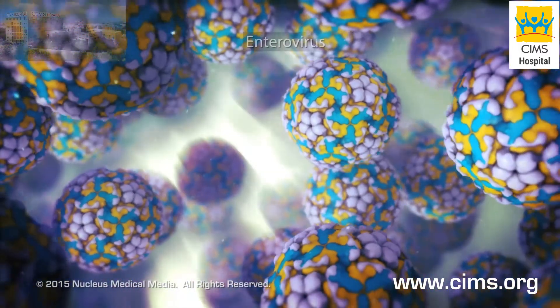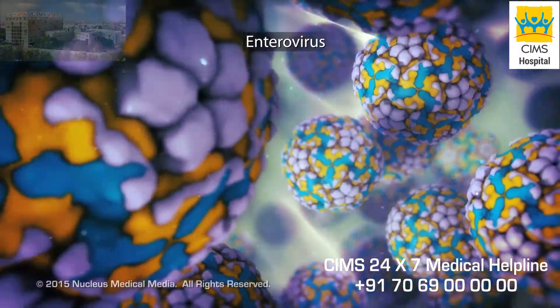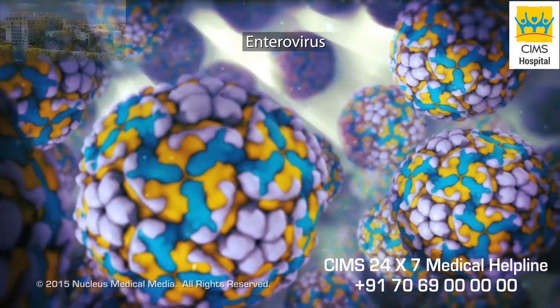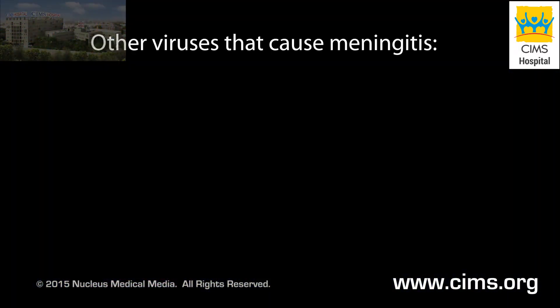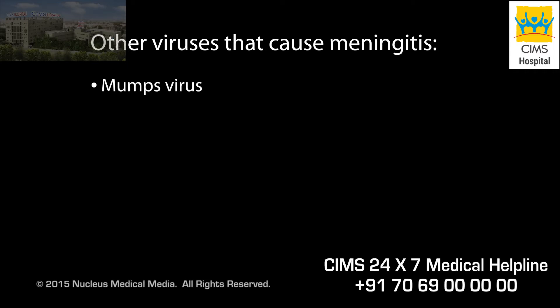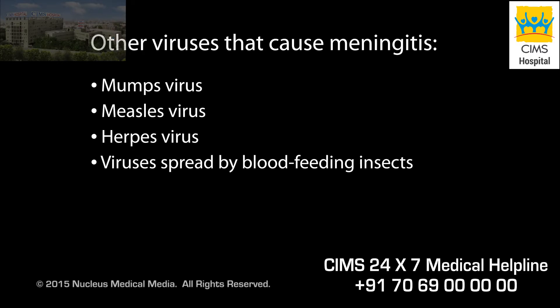The most common cause of viral meningitis is a type of virus called enterovirus. Other viruses that can cause meningitis include the mumps virus, the measles virus, herpes viruses, and a variety of viruses spread by blood-feeding insects such as mosquitoes and ticks.